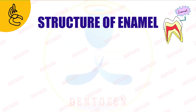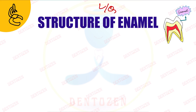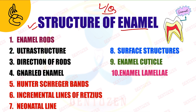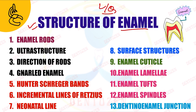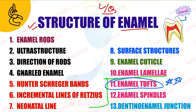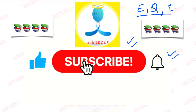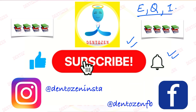Enamel tufts can also be part of your long question when asked about the structure of enamel in detail, where you have to list all microscopic structures. We have already discussed them in the previous videos up to enamel lamellae. So in today's video we'll discuss enamel tufts in detail. But before we start, don't forget to subscribe to Dentizen so that you keep getting such easy, quick, and informative videos. Also hit the bell icon so that you remain notified about new videos. Let's first understand, and then we will see how to write your answer.